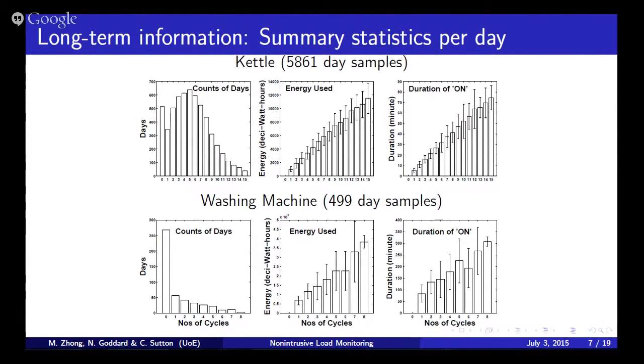Now I'm going to talk about the long-term information. These plots are some summary statistics per day of some interesting statistics. Let's do some experiments. For example, the kettle. I used the HESS data. For the kettle, about more than 5,000 samples.